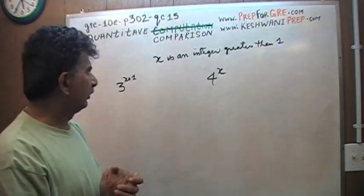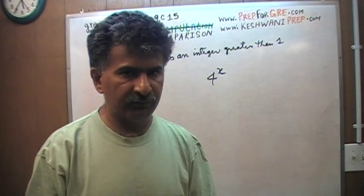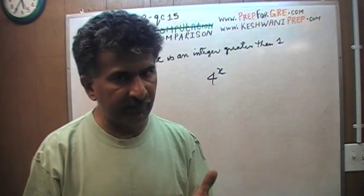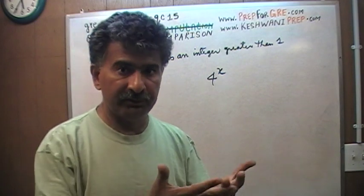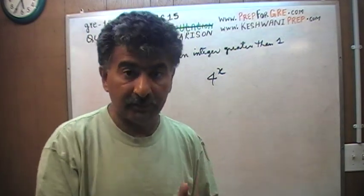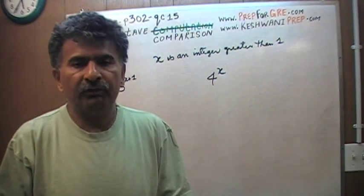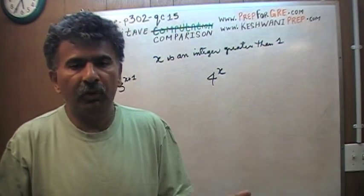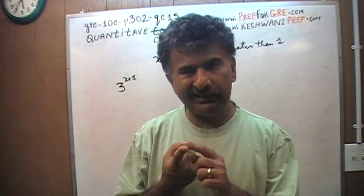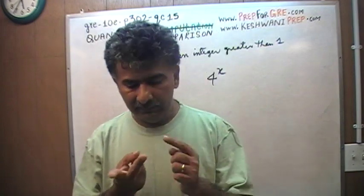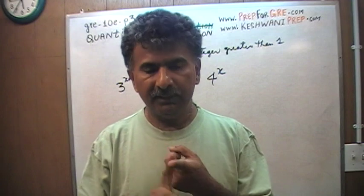Even if we assume nobody knew these questions — which isn't true — there are always 10 to 20 percent of test-takers who are pure mathematicians, physics majors, chemistry majors, or astronomy majors. They would know how to solve these questions very easily and get them right.